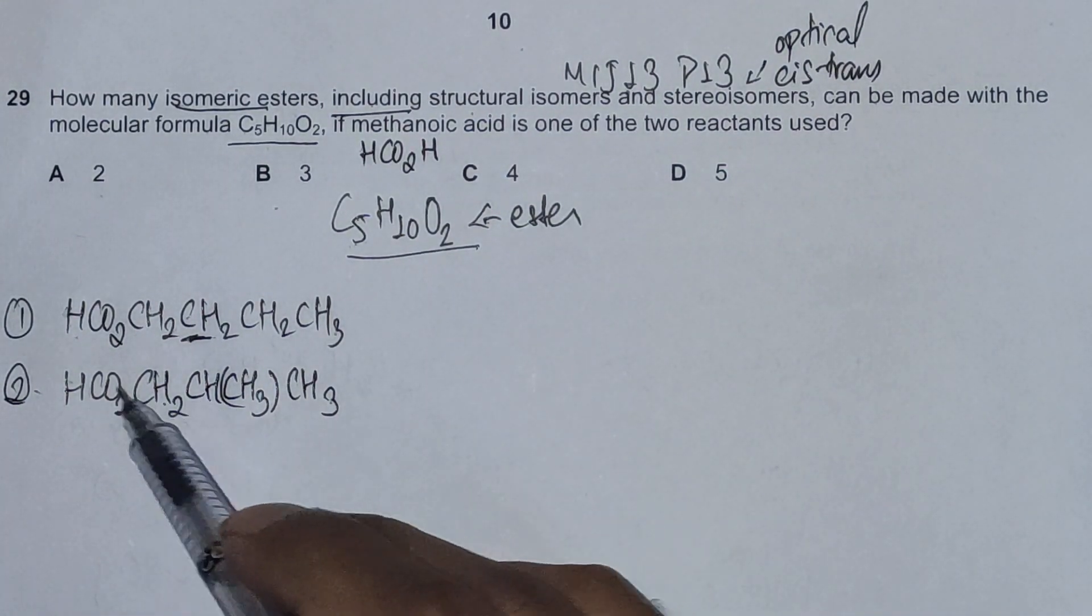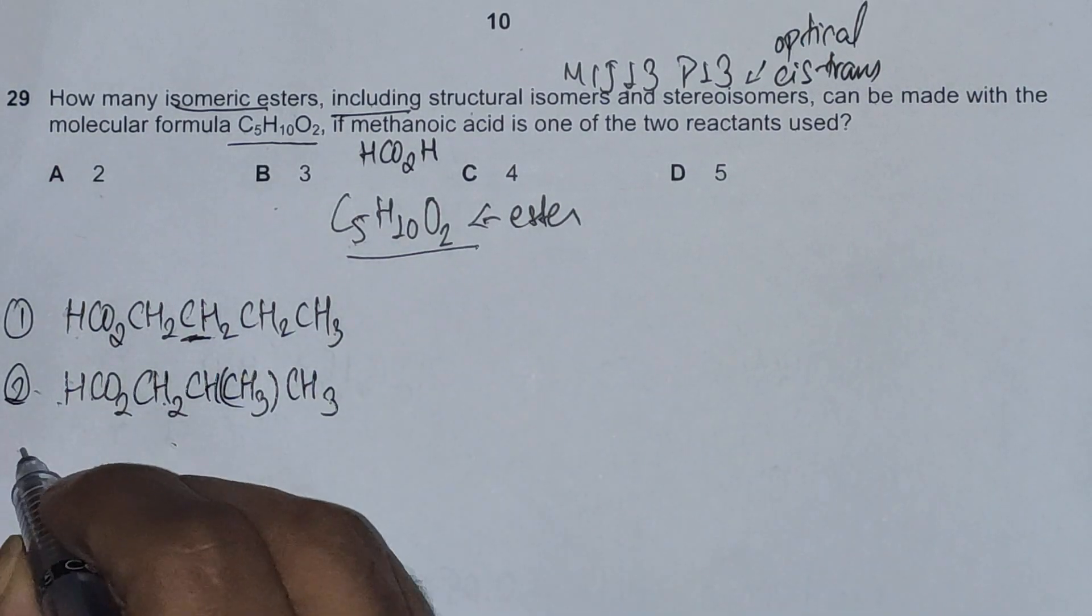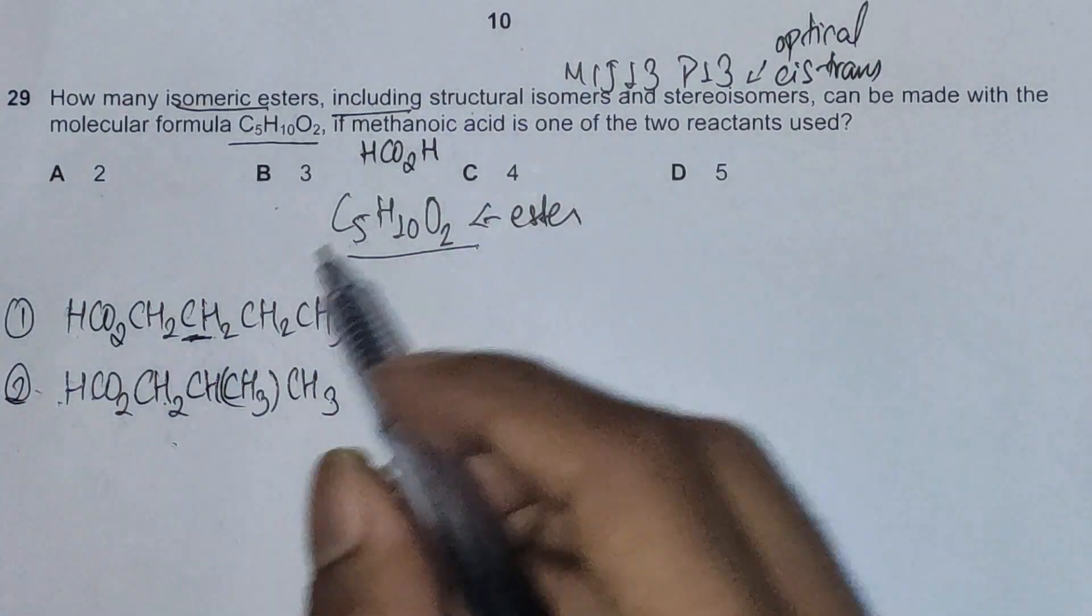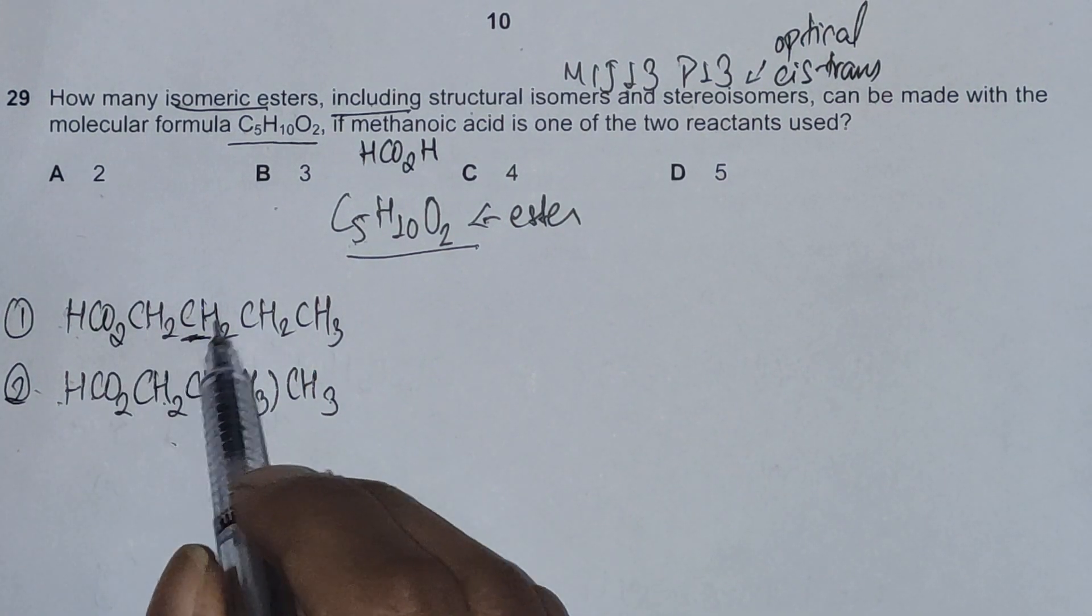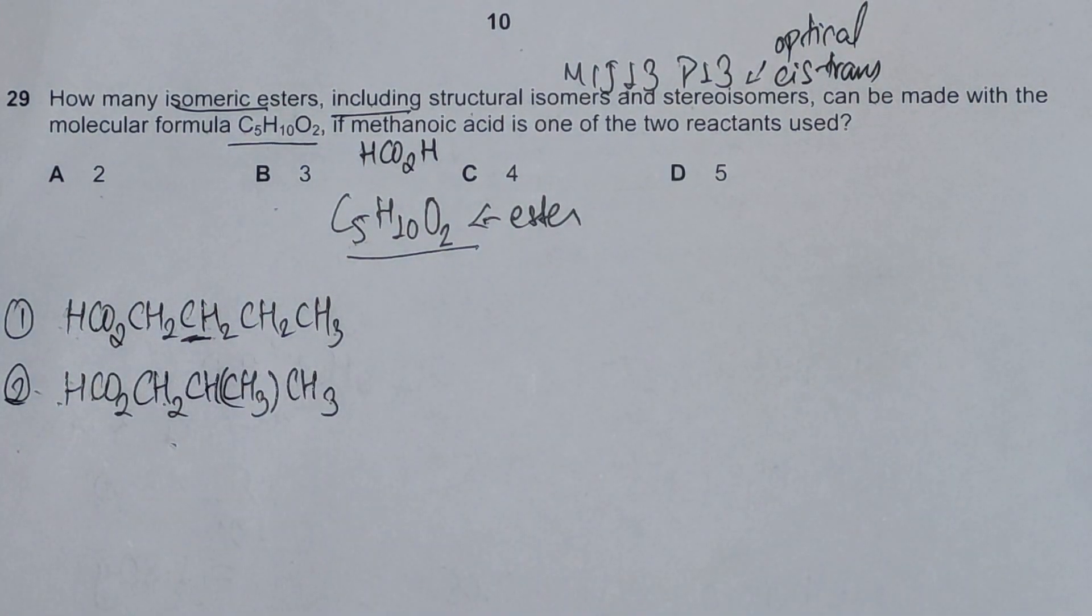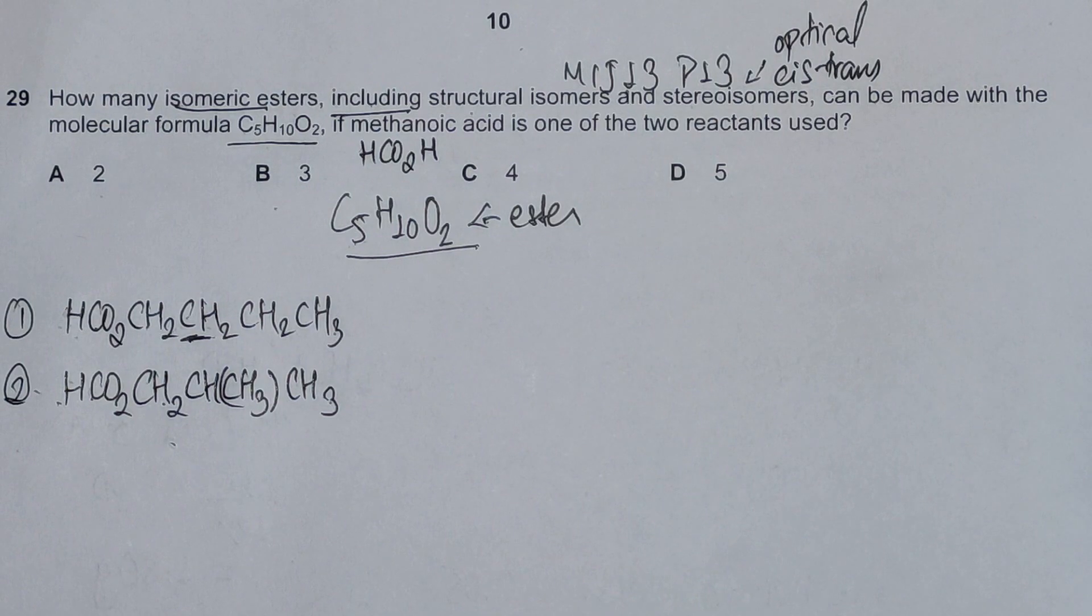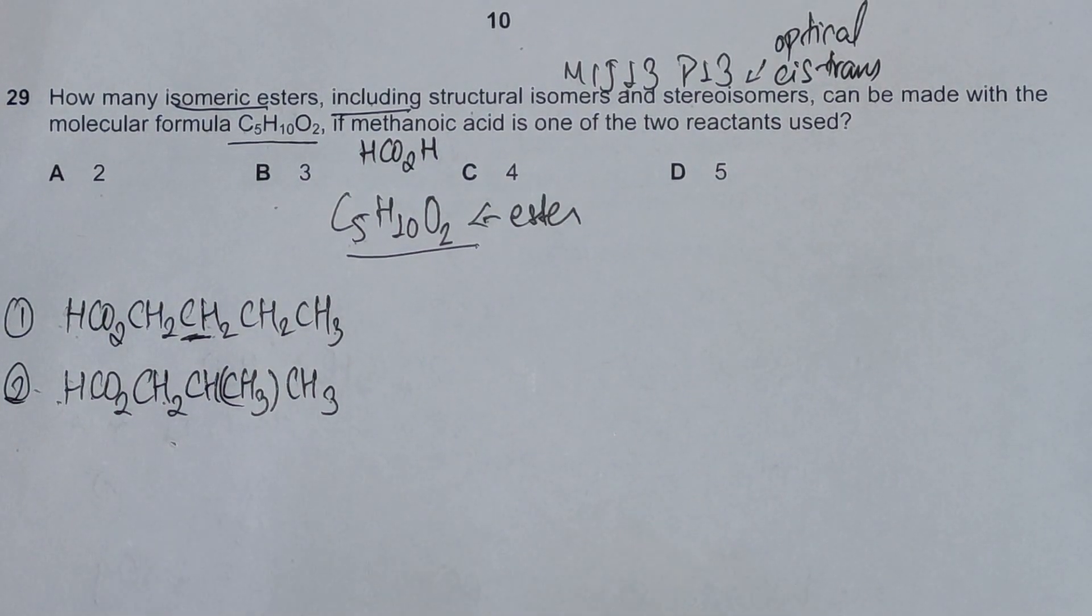Now checking for stereoisomers, this has no stereoisomers because this carbon has a double bond and the rest all have 2 or more than 2 hydrogen atoms attached to it, so it doesn't qualify for optical isomerism. And there's no carbon-carbon double bond, so we don't have to worry about looking for cis-trans isomers.